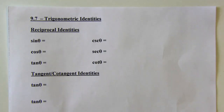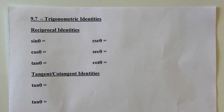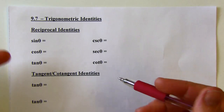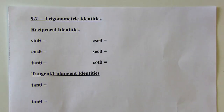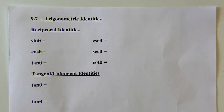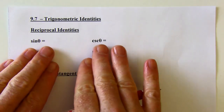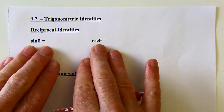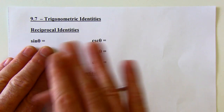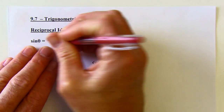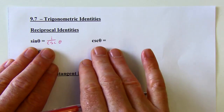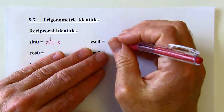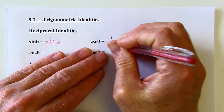First, we've got our reciprocal identities. Identities are just different things that sine can equal. We've already talked about opposite over adjacent or that it's the y value on the unit circle. The reciprocal identities: sine of theta is going to be equivalent to 1 over cosecant of theta, and cosecant theta is going to be equivalent to 1 over sine of theta.